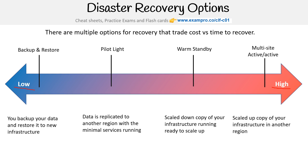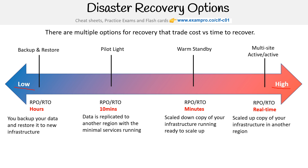Then you have multi-site active-active, where you have a fully scaled-up copy of your infrastructure in other regions — basically everything you have, identically, in another region. In terms of RPOs and RTOs: backup and restore is hours, pilot light is around 10 minutes, warm standby is minutes, and multi-site active-active is real time. That gives you an idea of the difference in scale — but let's look in more detail.